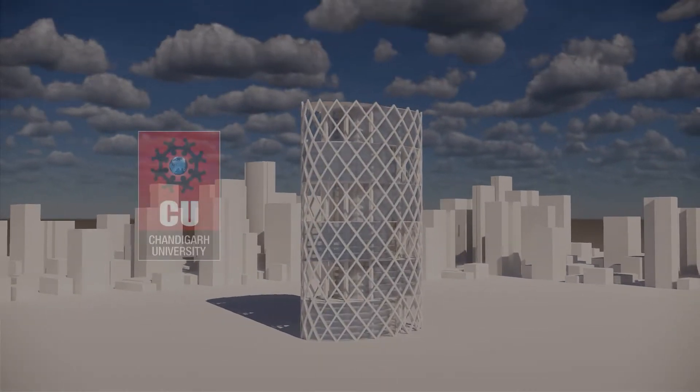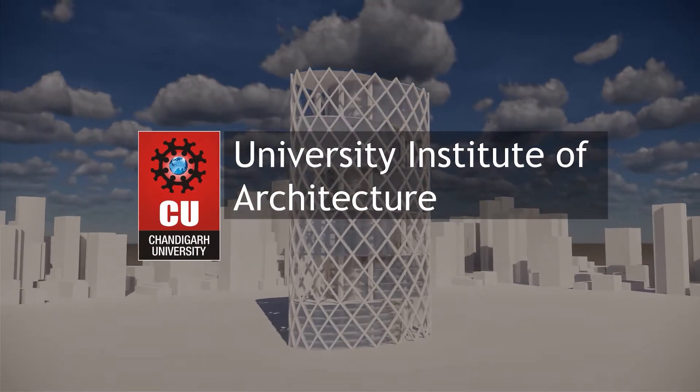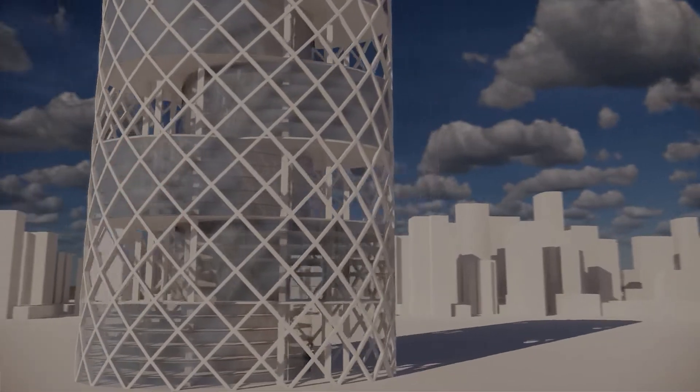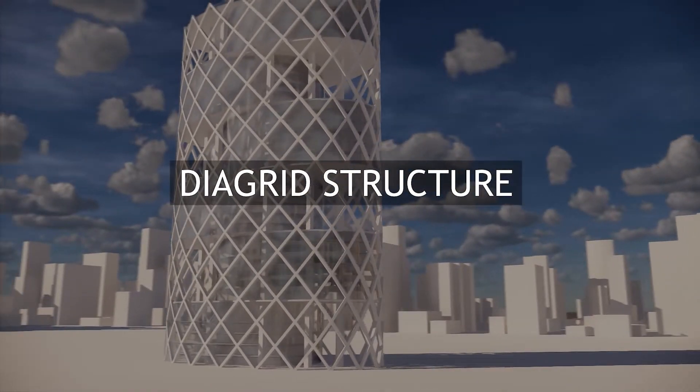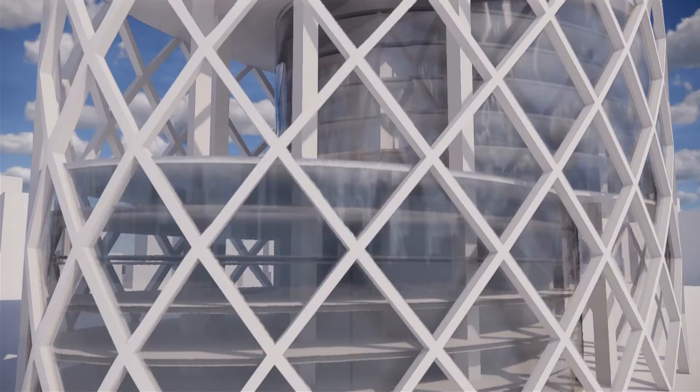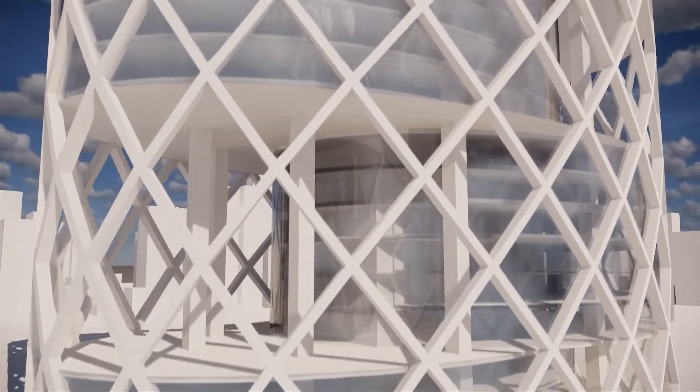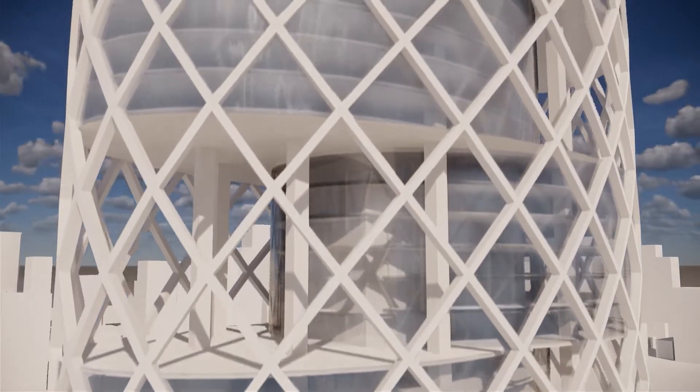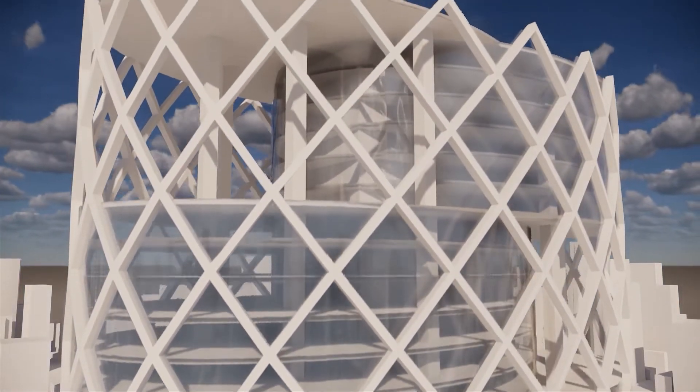Hello everyone, we are students of University Institute of Architecture. In this video, we are going to show you how a diagrid structure is built with the help of our own design. So first of all, what is diagrid structure? Diagrid is basically a framework formed by intersection of diagonal members. This framework carries both lateral actions and vertical loads, hence eliminating the use of long vertical columns.